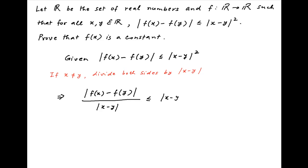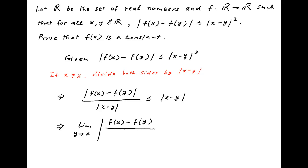Now take the limit of both sides as y tends to x. Note that the absolute value of x minus y equals the absolute value of y minus x, therefore the left-hand side can be written as the limit as y tends to x of the absolute value of f(x) minus f(y), upon y minus x.